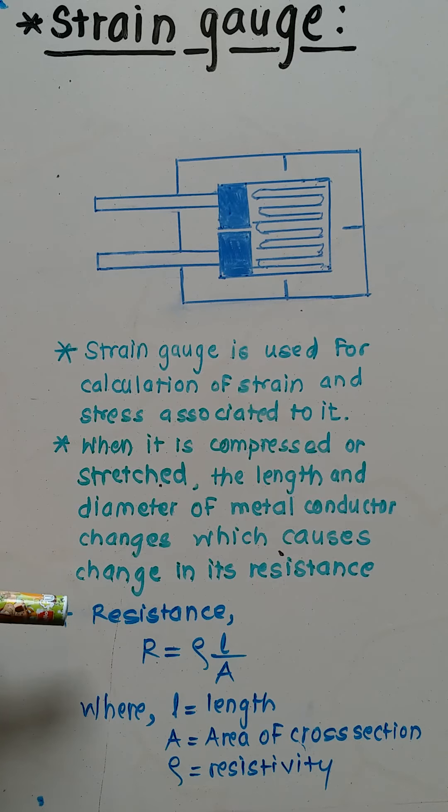In strain gauge, change in its length, change in its area of cross section causes change in its resistance and by that we can measure pressure, force, displacement, strain, and stress produced.